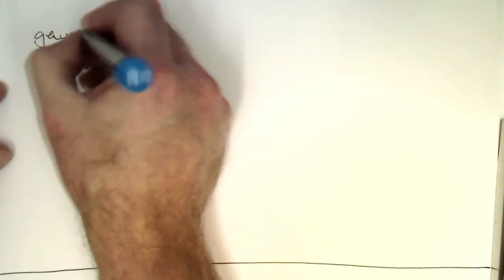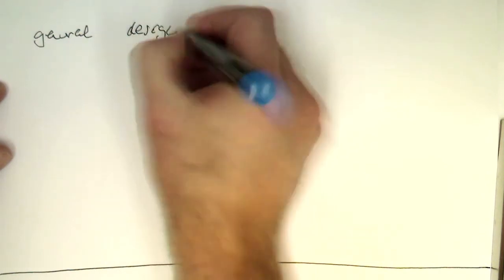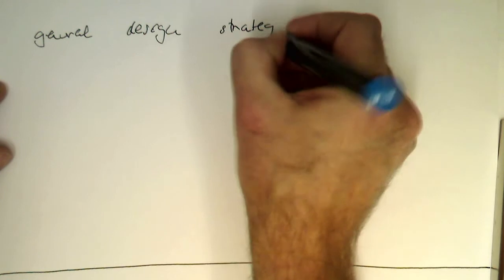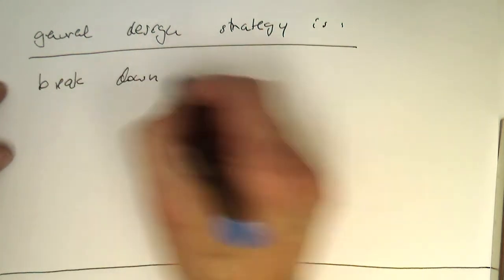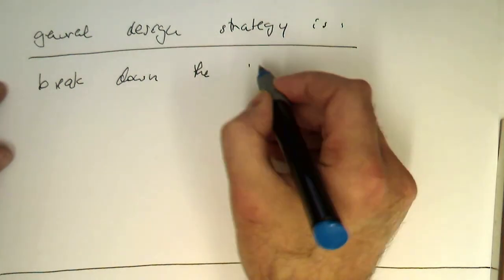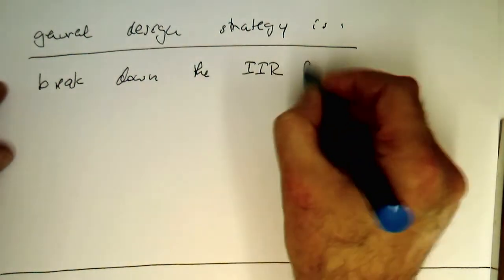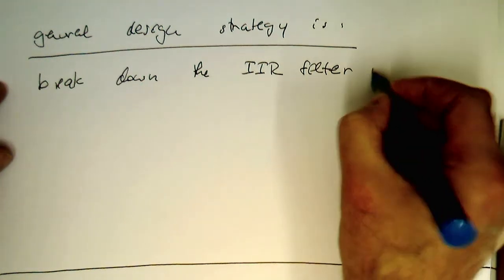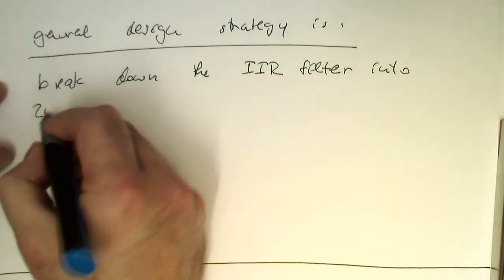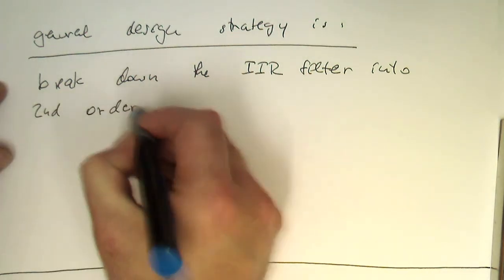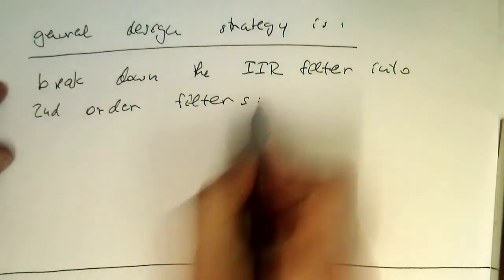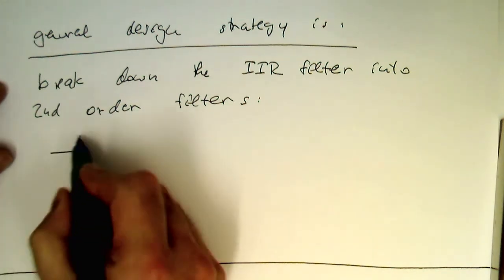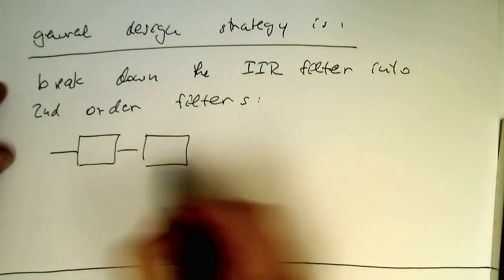The general design strategy is to break down the IIR filter into second-order filters, and we know that we can easily combine filters so that we have at the end a sequence of second-order filters here.